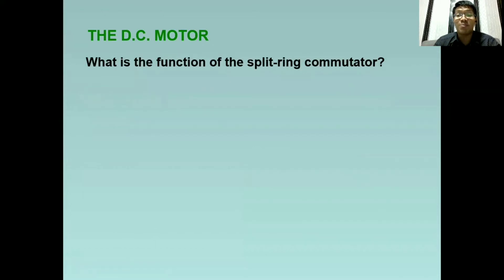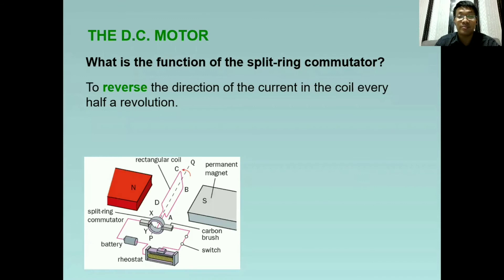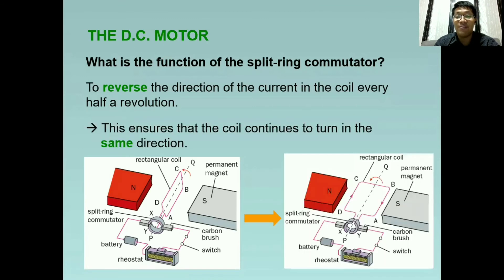So what is the function of the split ring commutators? So ito na yung function ni split ring commutator. So to reverse the direction of the current in the coil every half of the revolution. Kung naalala ninyo, from this position, we will have this one. And this is our half of a revolution. With the help of the split ring commutator, it will reverse the direction.